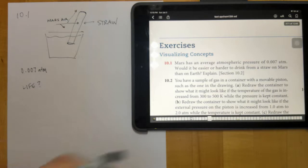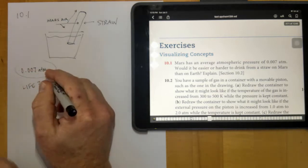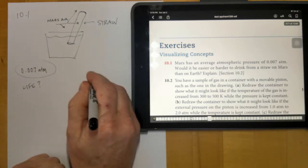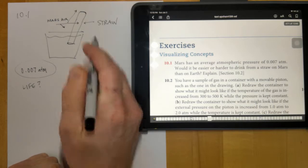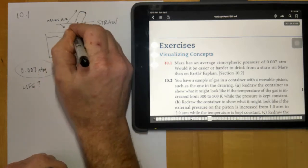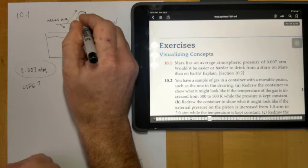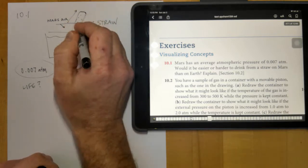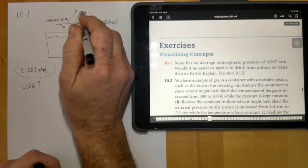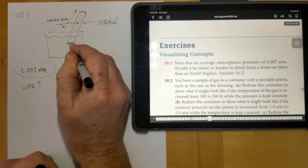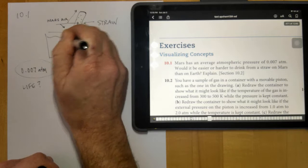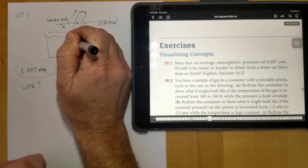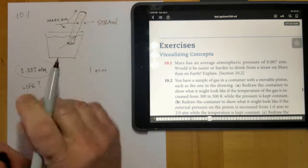It's only 0.007 of an atmosphere, and on Earth we have one atmosphere of air. Since there's a lot less air bumping against each other inside the straw, it would be easier for you to pull that air out and have the liquid sucked up into the straw.